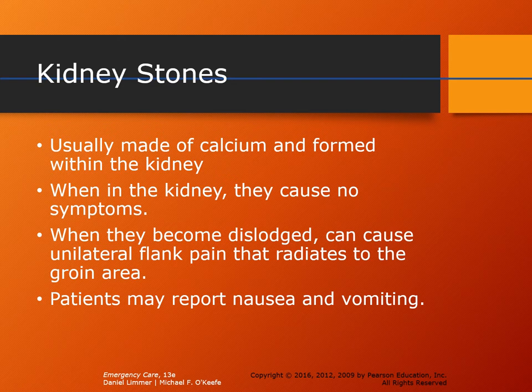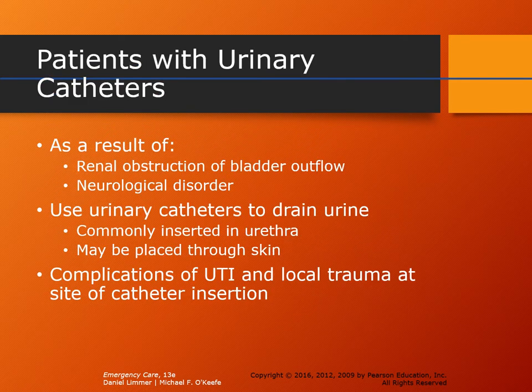Patients with kidney stones will complain of unilateral flank pain that radiates to the groin — pain from the back radiating to the groin — and they may report nausea and vomiting. They may also state they are having significant difficulty urinating, which could indicate a kidney stone lodged in the urethra. If the patient can't properly relieve themselves, that can lead to further issues with the bladder, ureters, and kidneys.